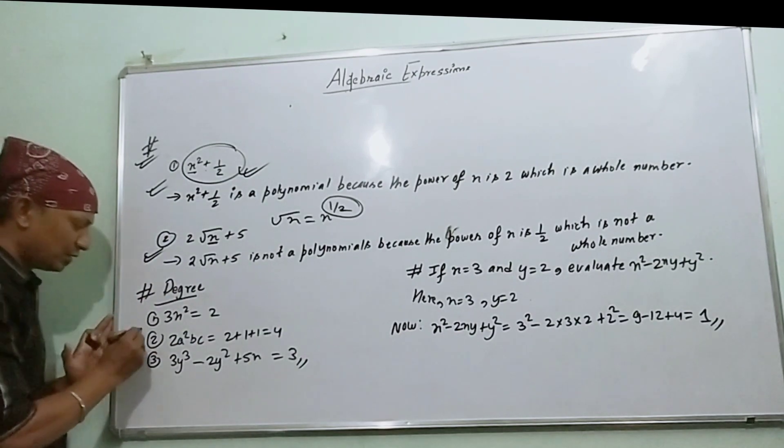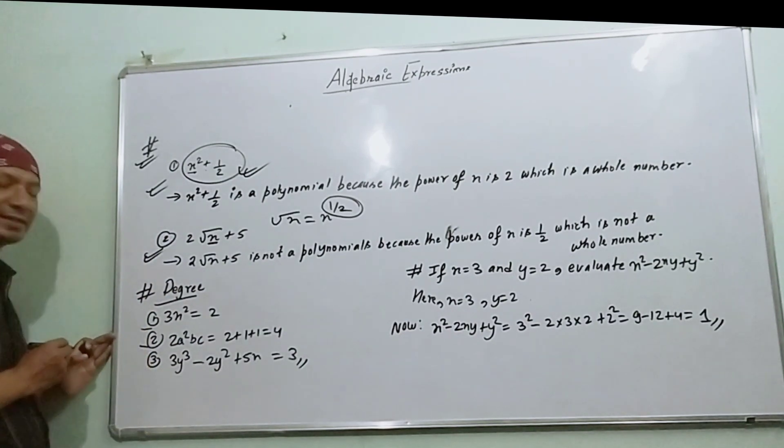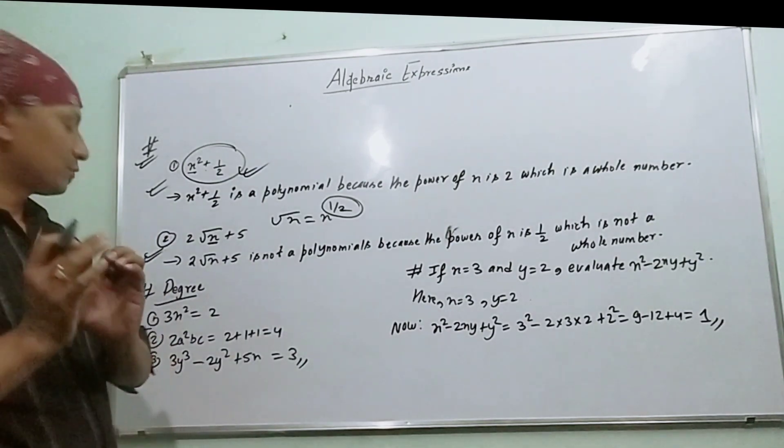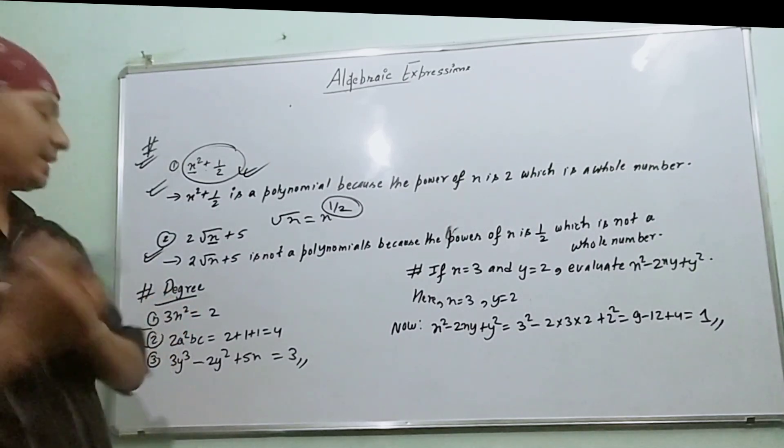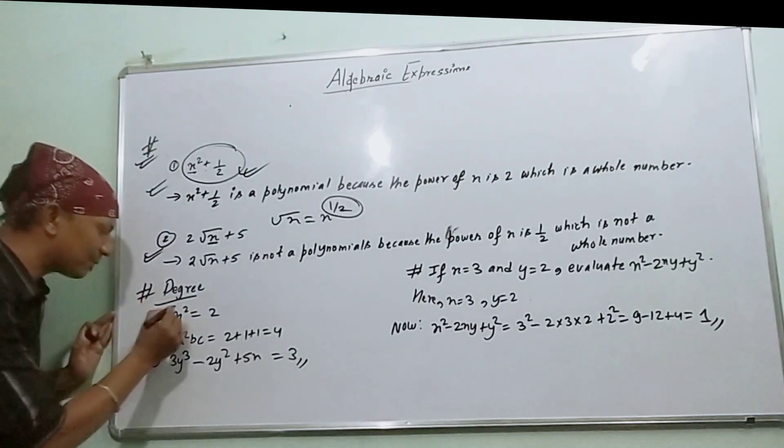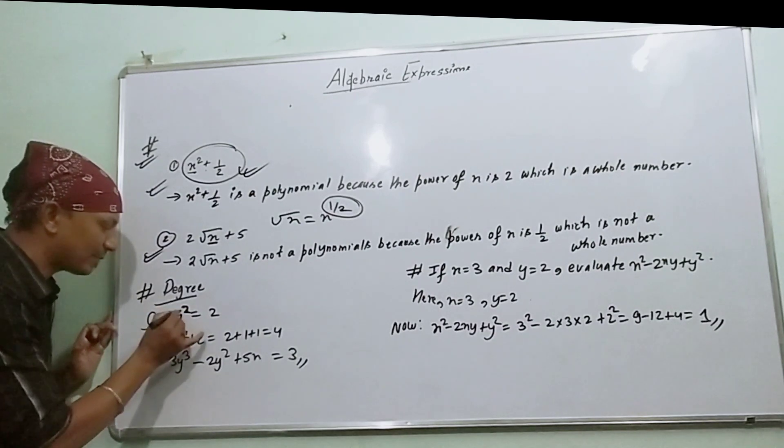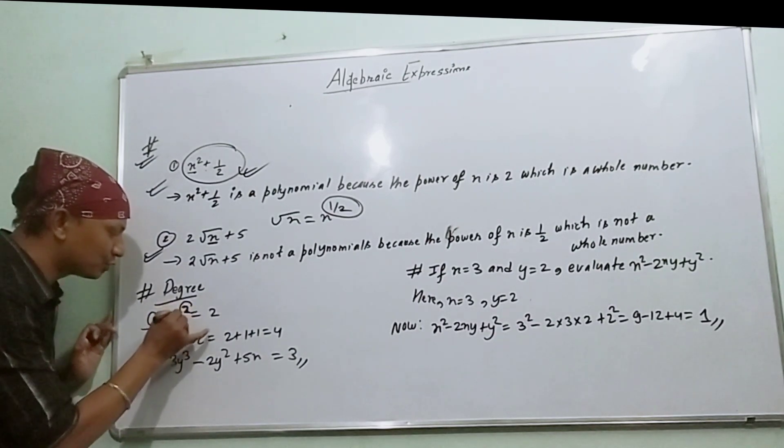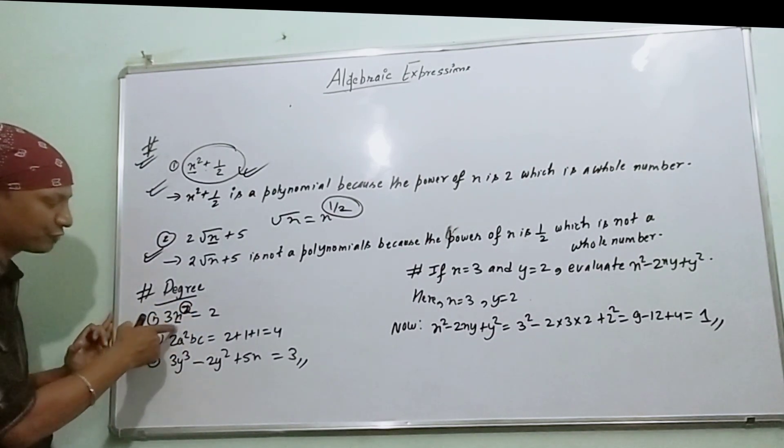Question two is about degree. The degree of an algebraic expression is the highest power. For example, 3x² has x to the power of 2, so the degree of 3x² is 2.